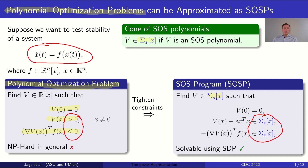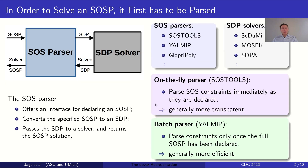SOS programs, or SOSPs, can be solved using semi-definite programming. The process of solving an SOSP can be decomposed into two stages: the parsing stage, where the SOS program is converted to an associated semi-definite program or SDP, and then the subsequent solving of this SDP. Software like SOSTOOLS or YALMIP are really SOS parsers — they provide an interface to declare an SOSP, convert it to an SDP, and pass it to a third-party solver such as SDPT3.